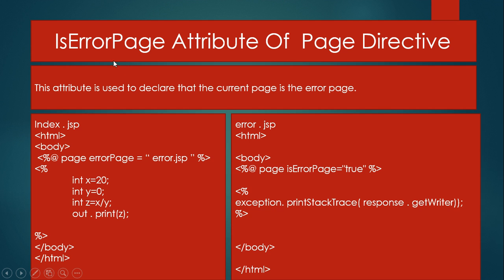The isErrorPage attribute of the page directive is used to declare that the current page is the error page. In the previous example, error page is defined as error.jsp with the same code getting an error, which redirects to error.jsp. In the error.jsp page directive, the attribute isErrorPage is set to true. This means when an error occurs, the implicit object 'exception' is used, calling the printStackTrace() method with response.getWriter() as the argument. This statement prints the error message — 'divided by zero' — onto the screen.